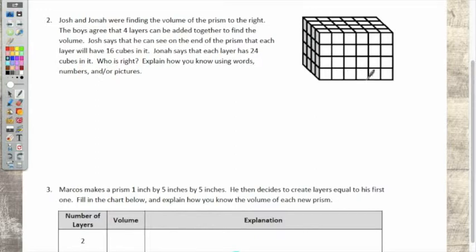1, 2, 3, 4, 5, 6. They were doing it the other way. Well, but they, the boys agree that four layers can be added together to find the volume. Josh says that he can see on the end of the prism that each layer will have 16 cubes in it. Is he right? Yes.